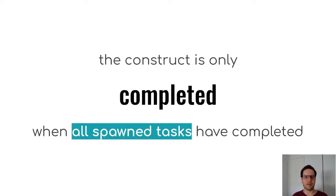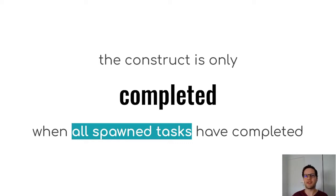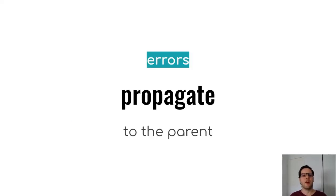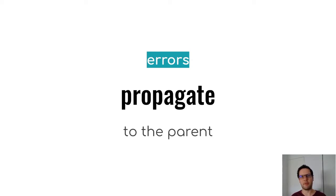That hierarchy is important. The fact that you have a hierarchy means that the parent task only completes when all tasks that it has spawned complete. So you cannot start a subtask and exit immediately — it's linked as part of the hierarchy. It also means that errors are dealt with by the parent, so errors in the child task propagate to the parent.